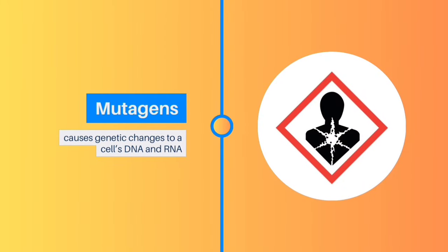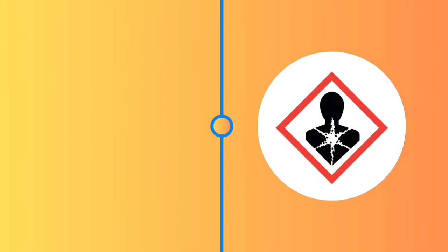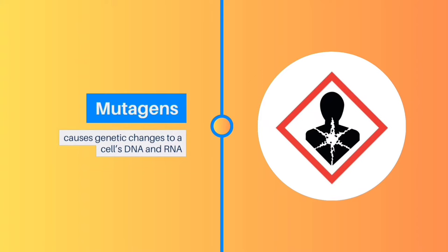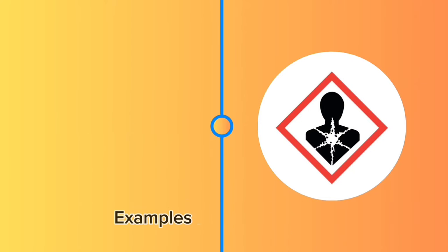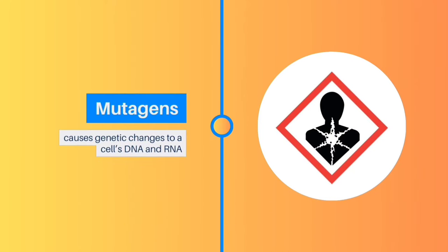Mutagens: Chemicals classified as mutagens cause genetic changes to a cell's DNA and RNA. Genetic changes can cause cancer, prevent normal biological functions, or may result in the malfunction of a particular organ. Examples include benzene and ionizing radiation.